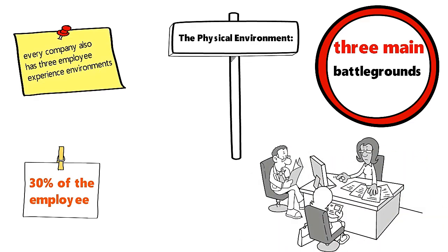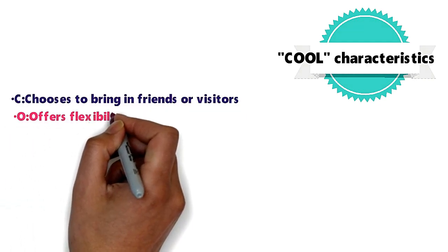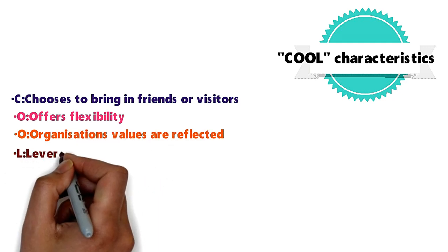According to Morgan, if they want to create a great physical environment for their employees, organizations need to focus on the following cool characteristics. C: Chooses to bring in friends or visitors. O: Organization's values are reflected. L: Leverages multiple workspace options.